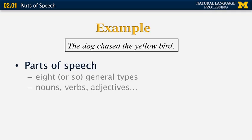Looking at the example sentence 'The dog chased the yellow bird,' we can identify multiple parts of speech: article, noun, verb, article, adjective, and noun. In English, there are about eight general types of parts of speech, including nouns, verbs, and adjectives, which we've already seen.